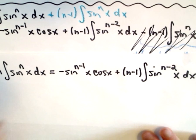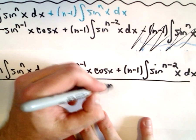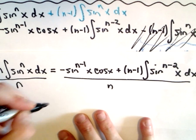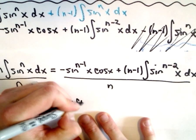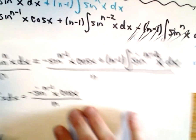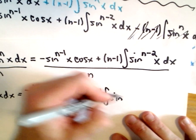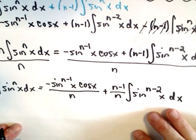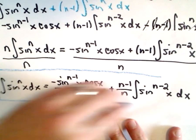The last thing to do is divide both sides by n. On the right side we're left with negative sin^(n-1)(x) cos(x) plus (n-1) times the integral of sin^(n-2)(x) dx. Dividing by n gives us: ∫sin^n(x)dx = -sin^(n-1)(x)cos(x)/n + (n-1)/n · ∫sin^(n-2)(x)dx. And that is in fact what we set out to show.